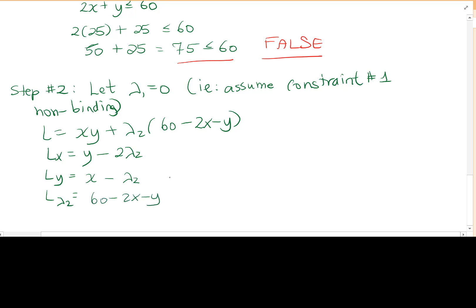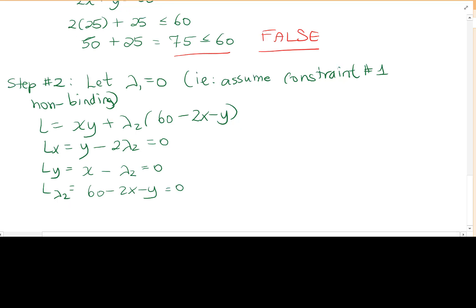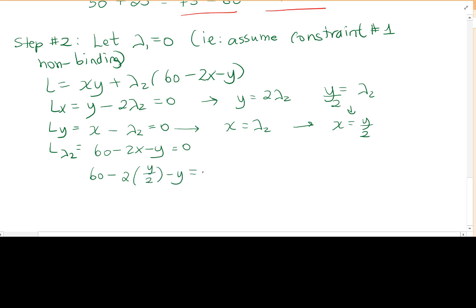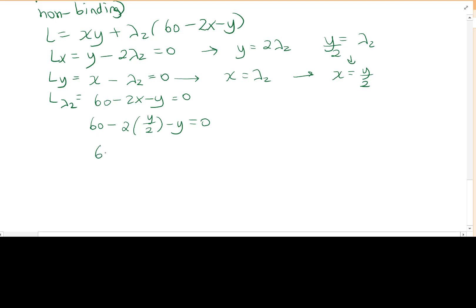We also have 60 − 2x − y = 0. Setting all derivatives to zero: y = 2λ₂, so λ₂ = y/2; and x = λ₂, so x = y/2. Substituting into the constraint: 60 − 2(y/2) − y = 0, giving 60 − 2y = 0, so y = 30 and x = y/2 = 15.